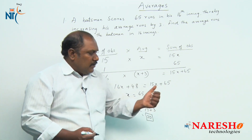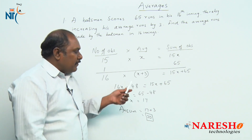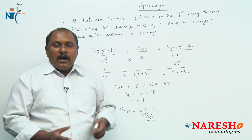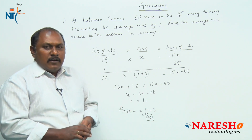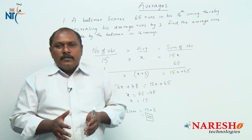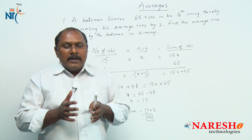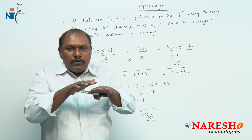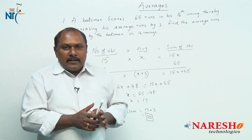We can see it is a very lengthy method to solve this particular problem with a bit of calculation. How to tell the answer for this question in 5 to 10 seconds max? Let us see the alternate method. In the alternate method we should not use the formula. Coming to what is average — average is nothing but uniform distribution.